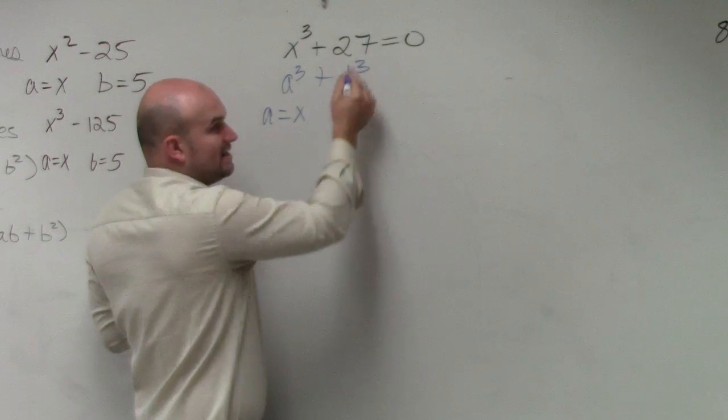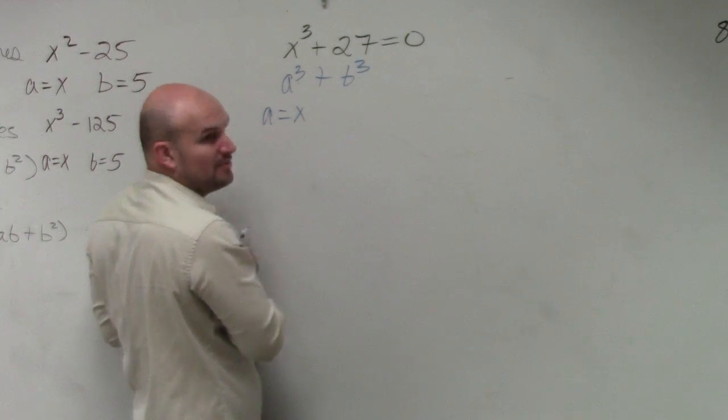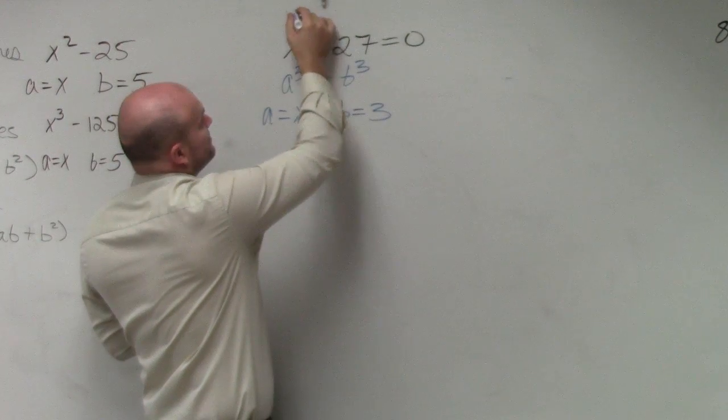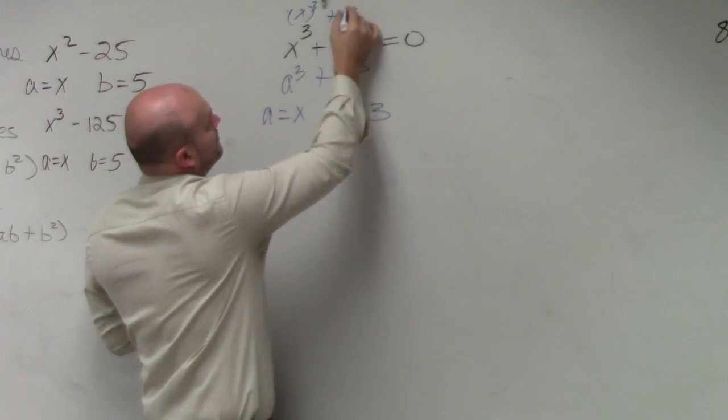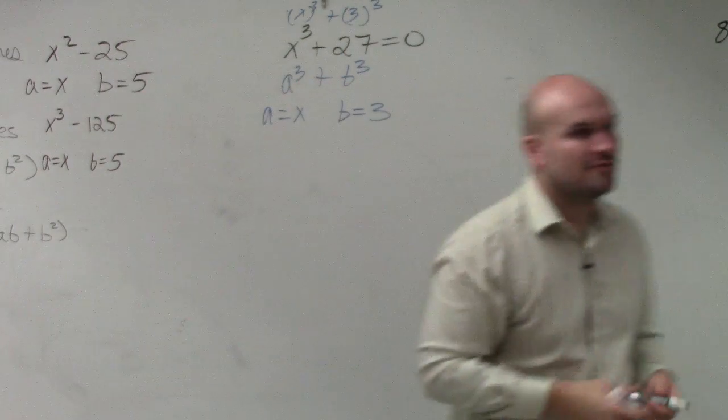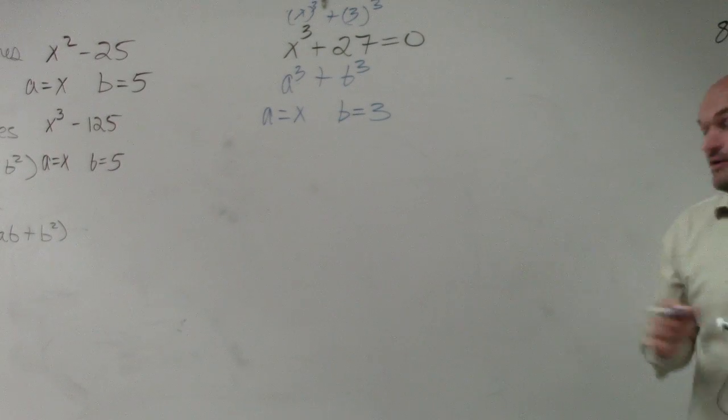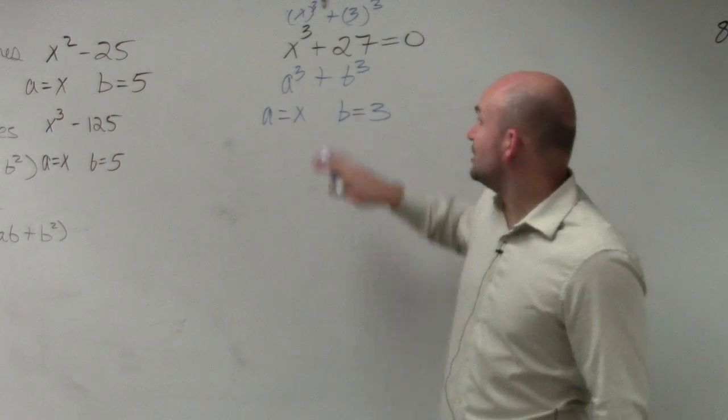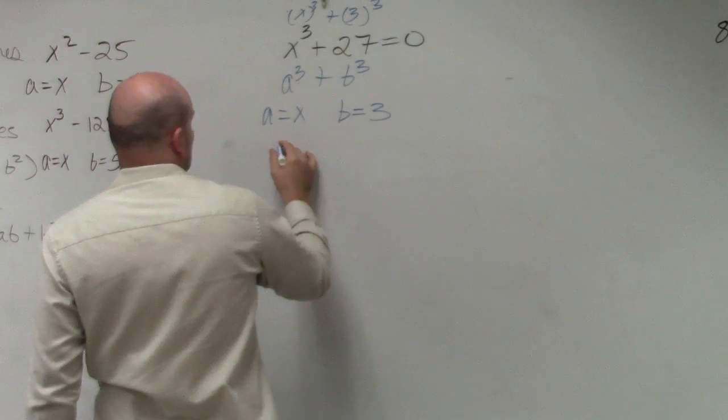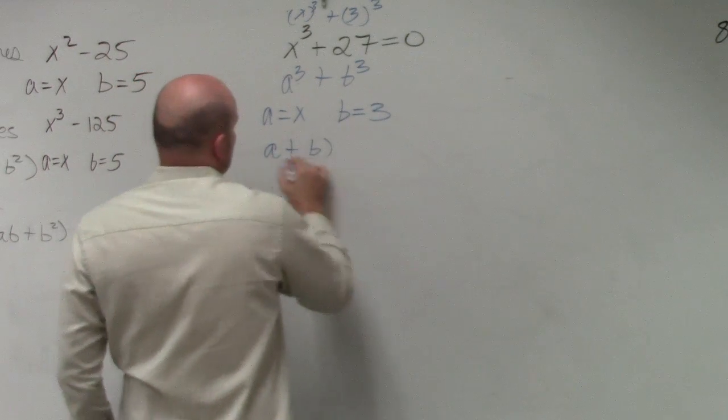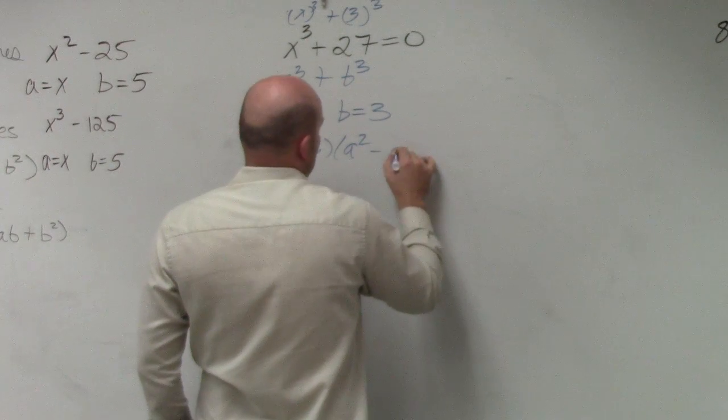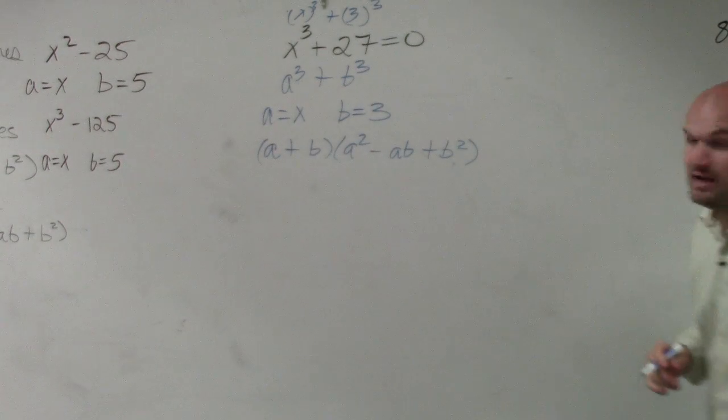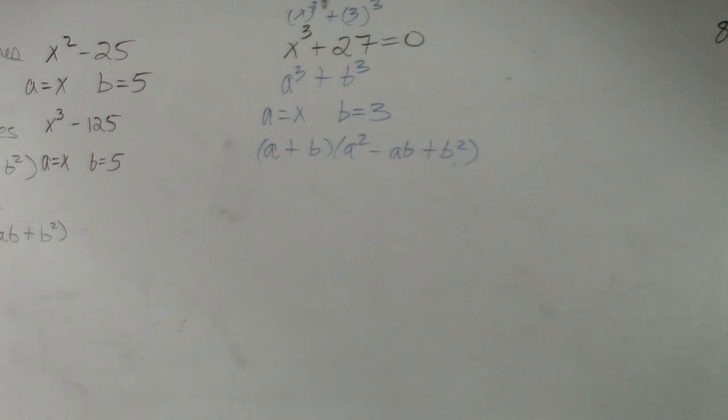b cubed is 27. What number raised to the third power gives me 27? You guys can think of it like this. 3 raised to the third power is 27. So now that I know what a is and I know what b is, I'm just going to apply my formula. This is the sum of two cubes. So it basically works like this: a plus b times a squared minus ab plus b squared.